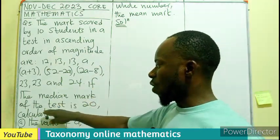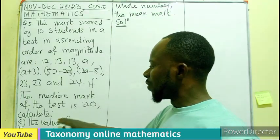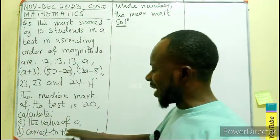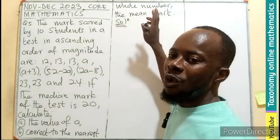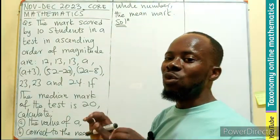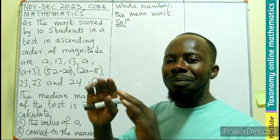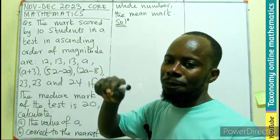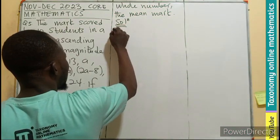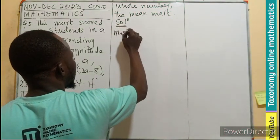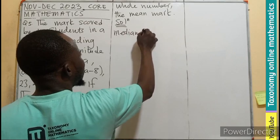If the median mark of the test is 20, find the value of A, and then find the value of the mean to the nearest whole number. So let's begin. What does the median stand for? We know the median is the middle term of the data.